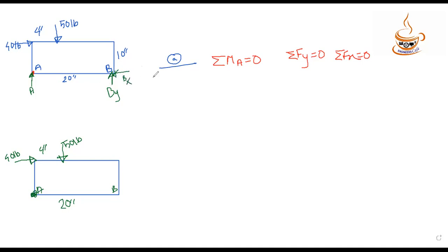Using the equilibrium formula, we apply the equations of equilibrium. There are two unknowns: By and Bx. Applying the moment equation, and from the horizontal force equilibrium, we get Bx equal to 40 pounds.